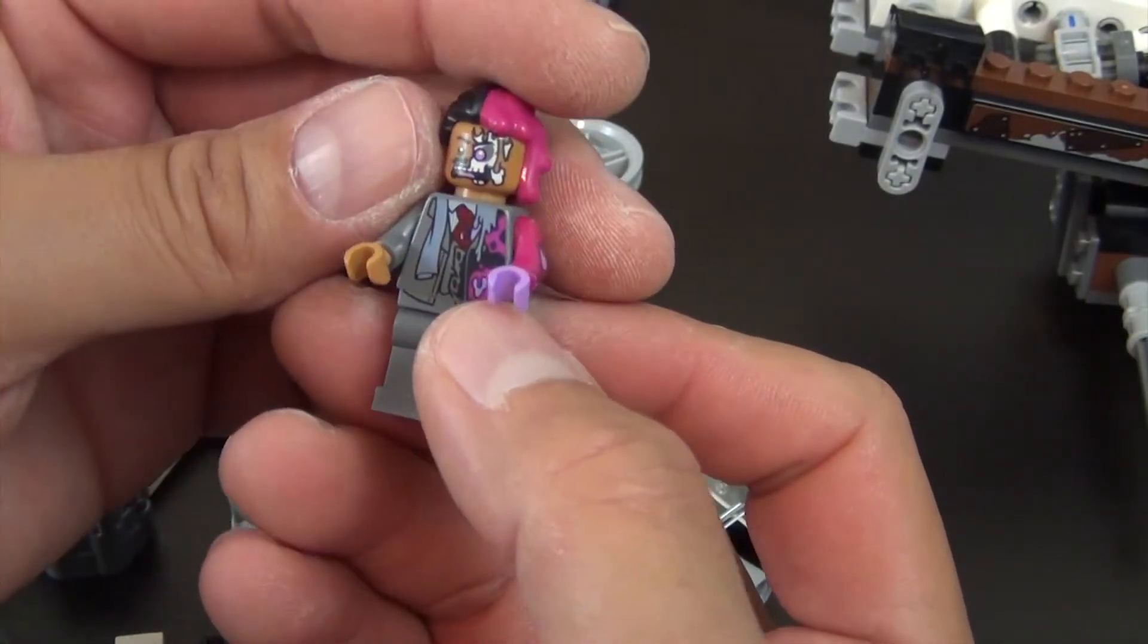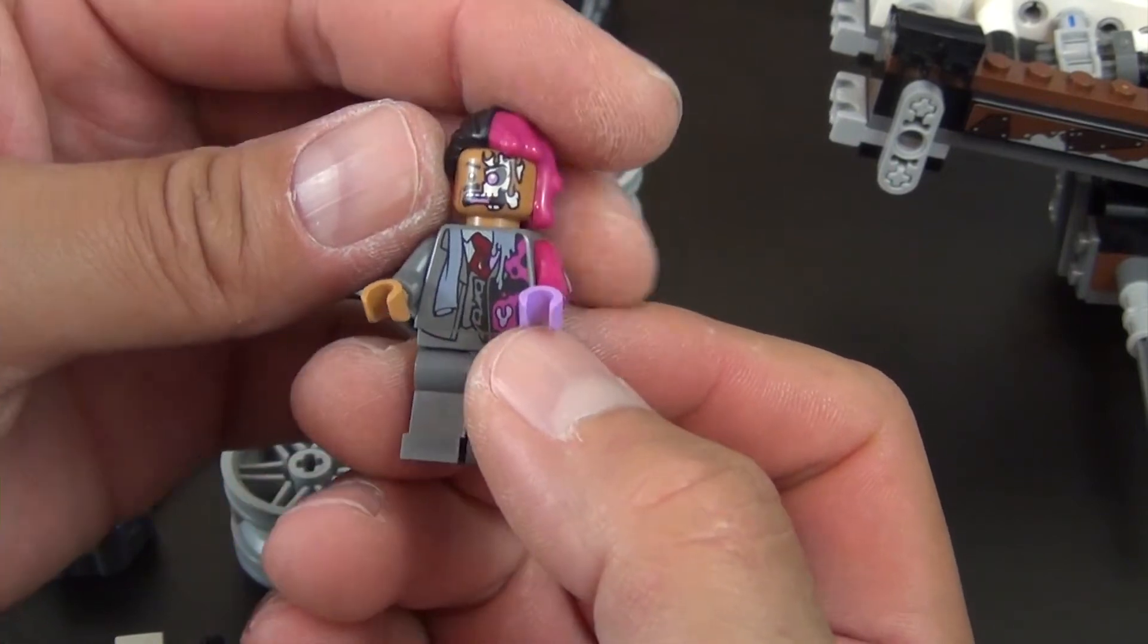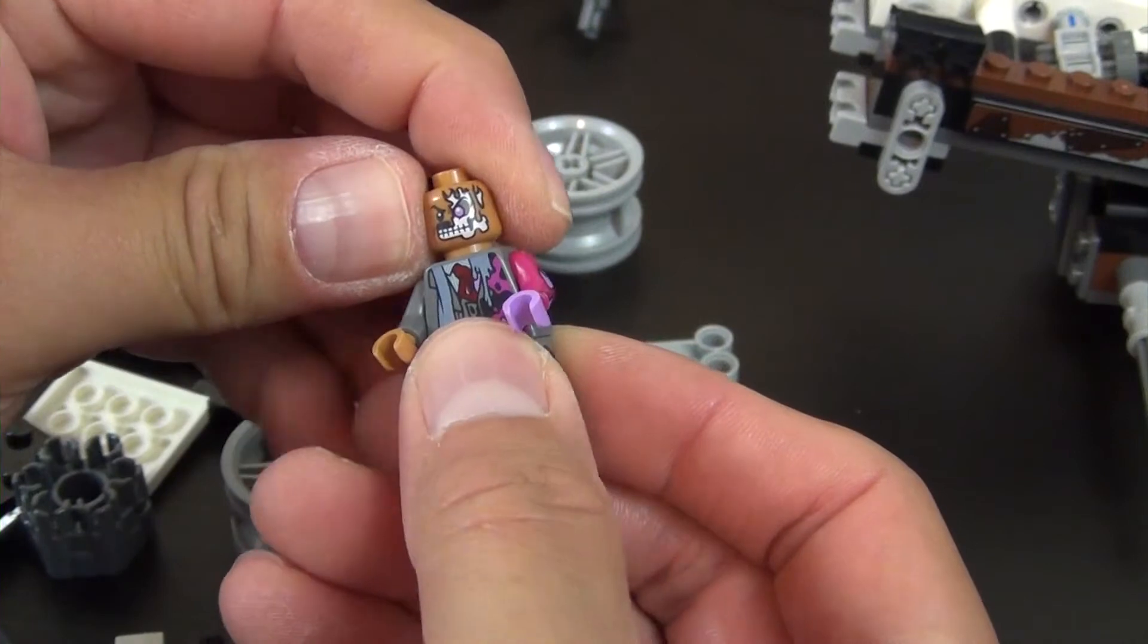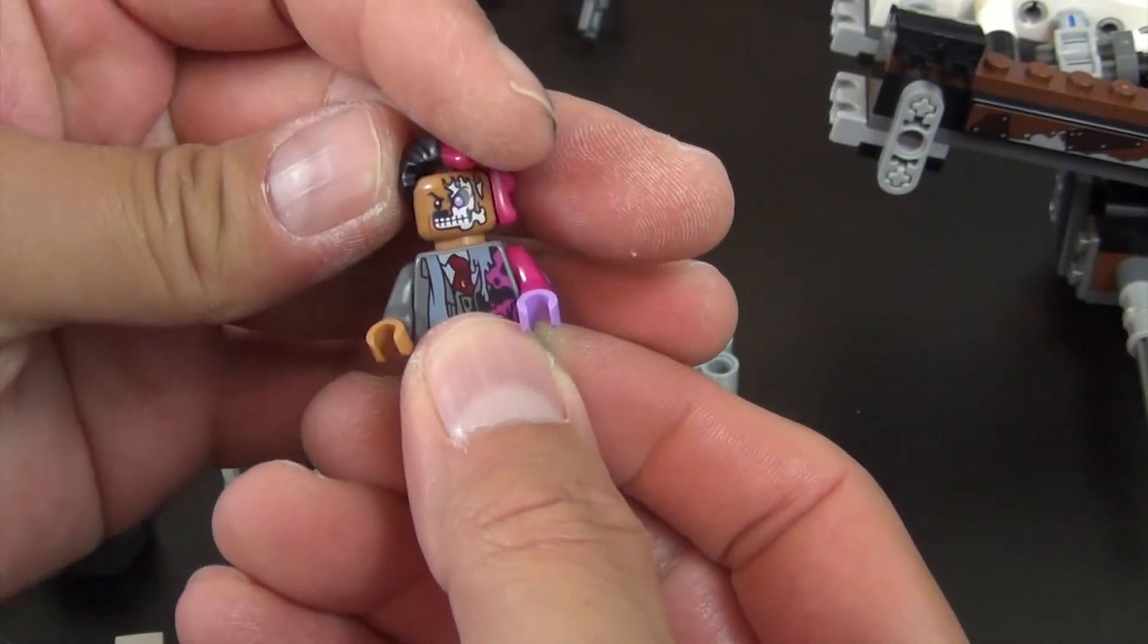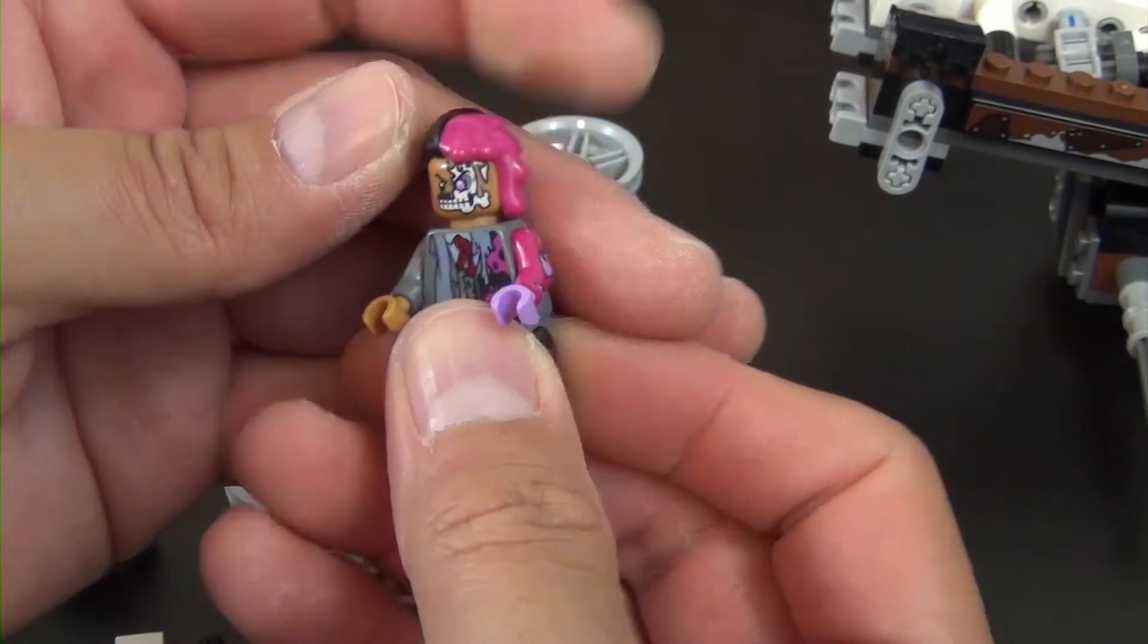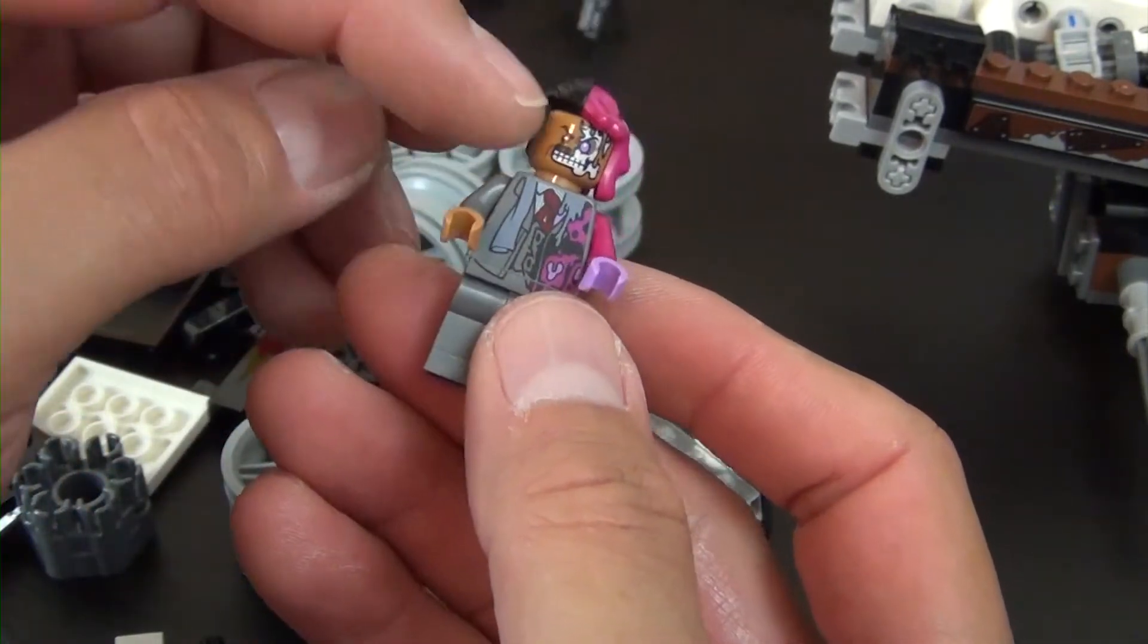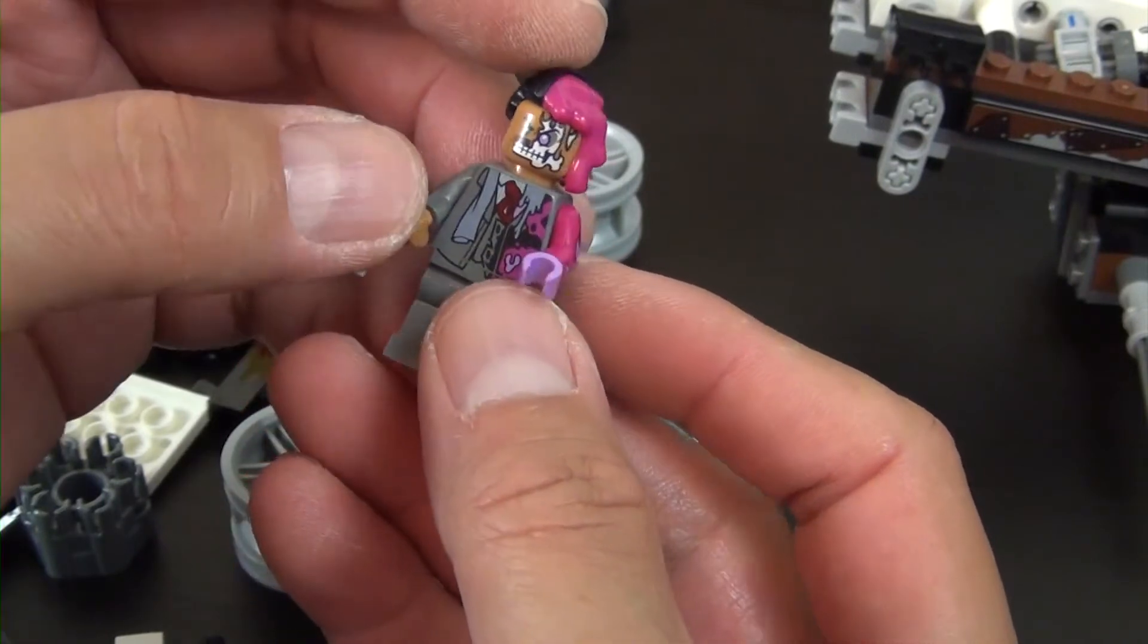So he does have a double printed face - you can see this is kind of the scared or screaming face, and then this is the angry face. I actually like the angry face. And then of course on this side it's the mutated side and this is the unaffected side.